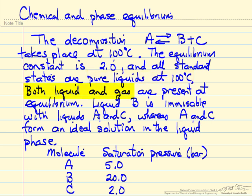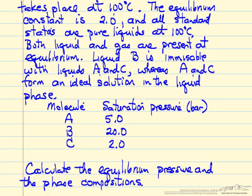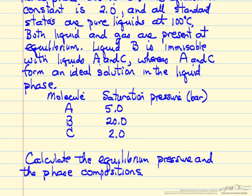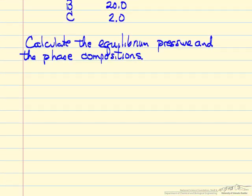Now at equilibrium, we're going to have both liquid and gas present. To further simplify the system, we'll assume that liquid B does not mix with liquids A and C, but liquids A and C mix together to form an ideal solution. We're also given the saturation pressures of pure components A, B, and C. So we're going to apply both chemical equilibrium and phase equilibrium, and the objective is to determine the equilibrium pressure and the compositions of the liquid and the vapor phases.